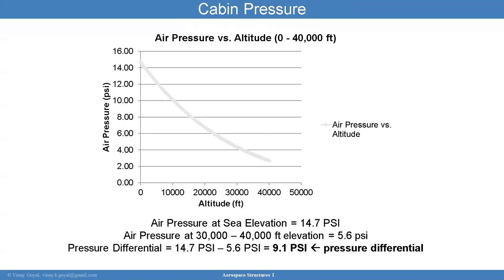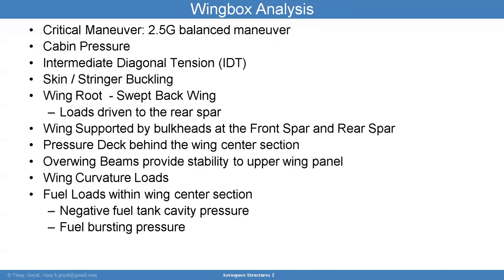The wing box analysis is going to include a number of analyses: critical maneuver, cabin pressure, skin-stringer buckling, wing root, wing supported by bulkheads, for example. And then you have pressure deck behind the wing center section, wing curvature loads, fuel loads within the wing center section, negative fuel tank cavity pressure, and fuel bursting pressure. So all these analyses need to be accounted for in the analysis.